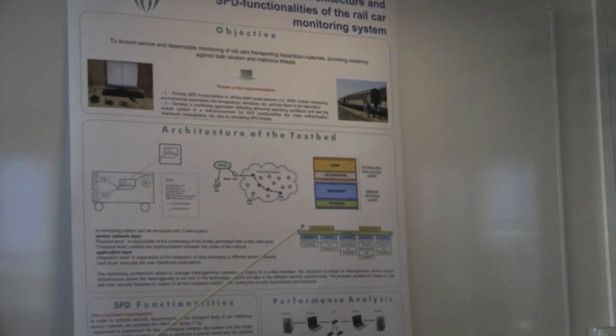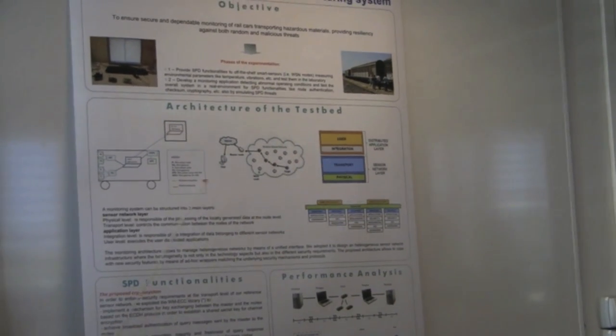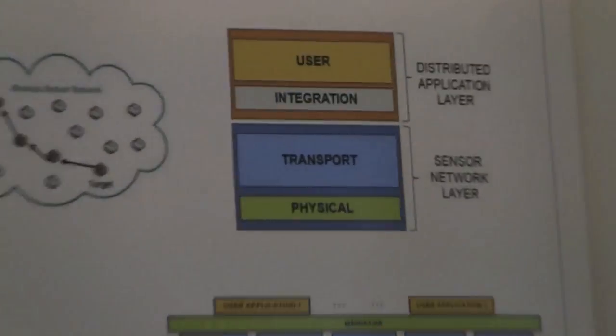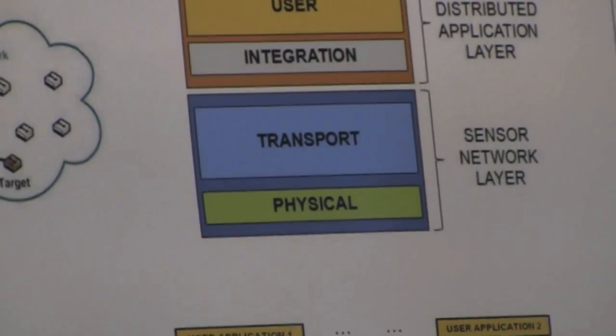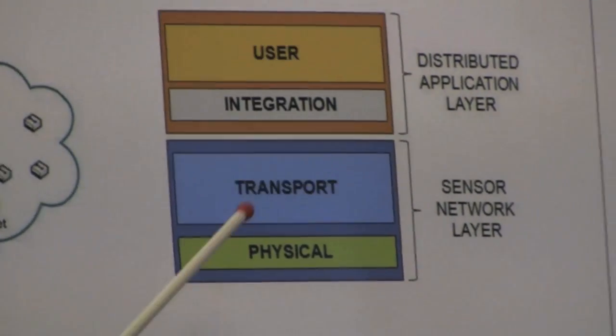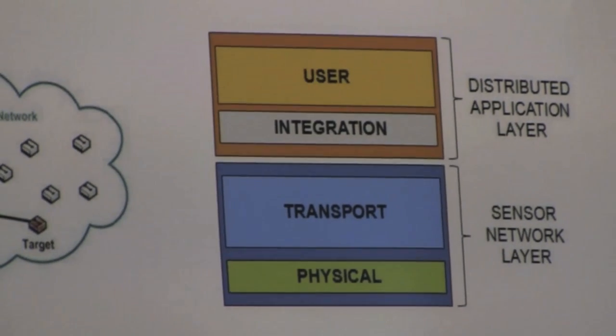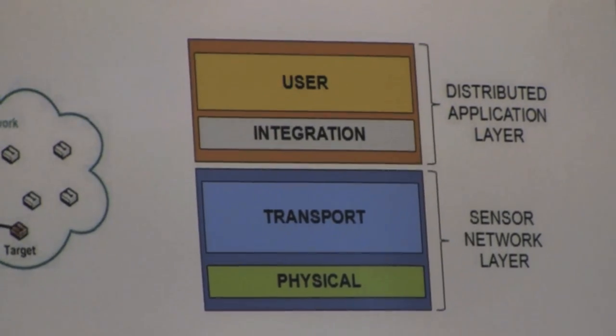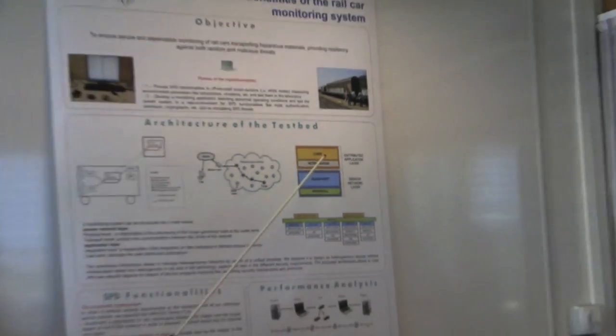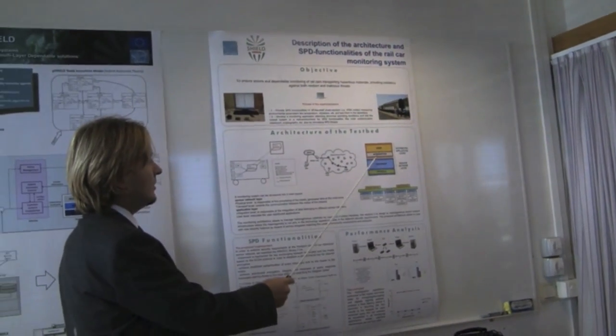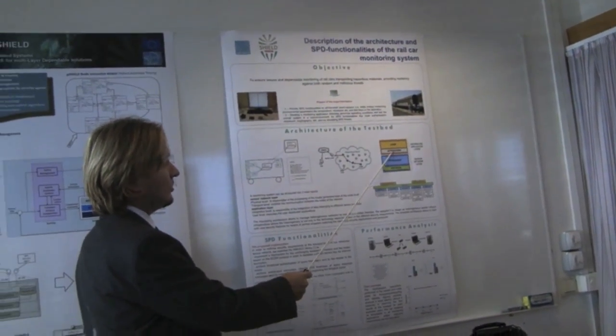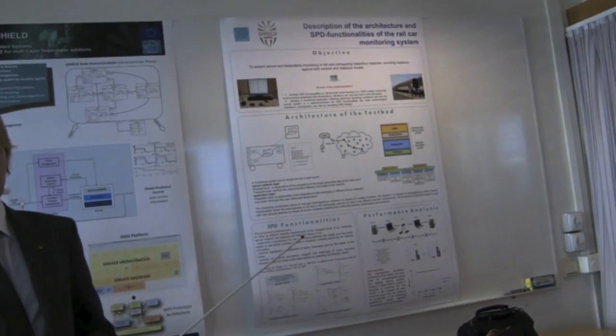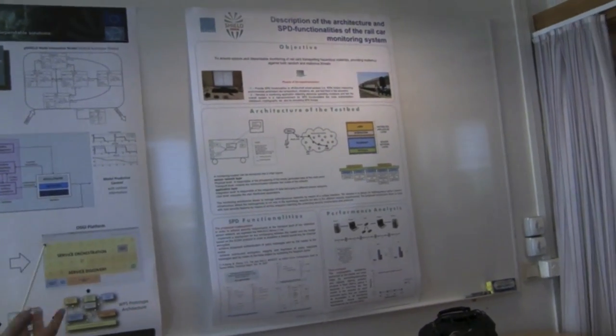The physical layer, which is located on the local elaboration of the node. The transport layer, which involves the communication among the nodes and also among the nodes and the master node. And the distributed application layer that regards data integration, possibly reasoning, and the user interface, so the monitoring application.